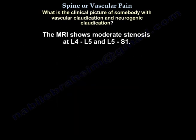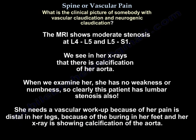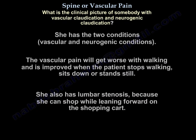On MRI, there is moderate stenosis at L4-L5 and L5-S1. Her x-rays show calcification of the aorta. On examination, she has no weakness and no numbness. So clearly, that patient also has lumbar stenosis. She needs a vascular workup because her pain is distal in her legs, because of burning in her feet, and because her x-ray shows calcification of the aorta. She has both conditions — vascular and neurogenic.